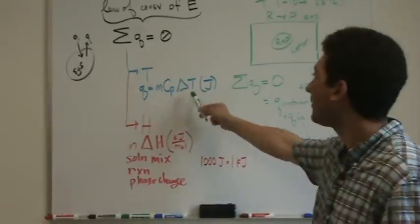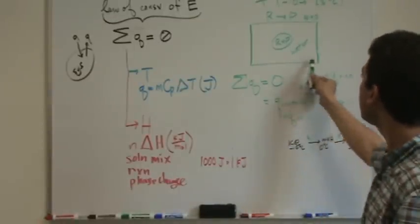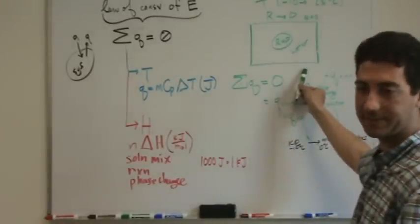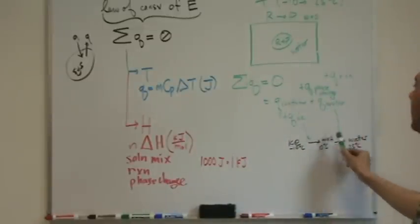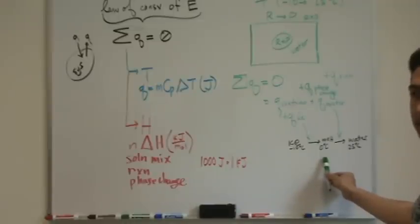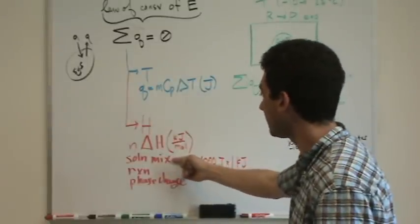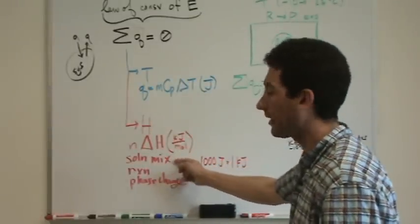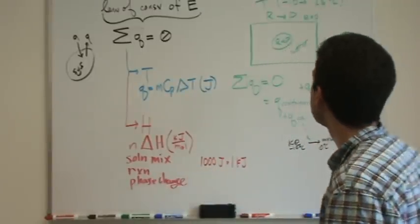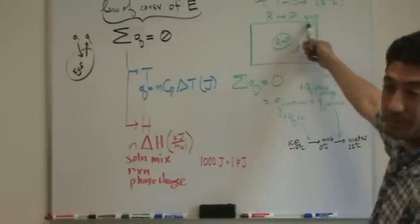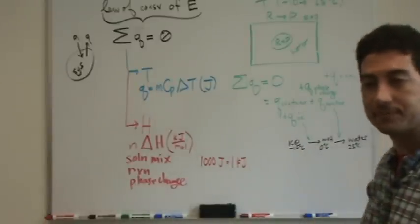You always have to think - everything that has a temperature change has to have a Q. In this case there were three things: the container will warm up, the water warms from 0 to 25, the ice warms from minus 10 to 0. Those are all temperature changes. Then you go, are there any enthalpy changes from a solution mixing, reaction, or phase change? There was a reaction - it's exothermic, delta H is going to be negative. And there's a phase change of melting.